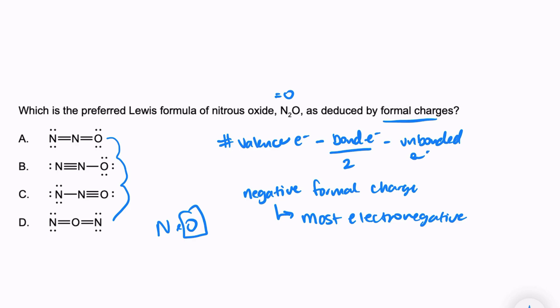When I look at all of these options A, B, C, and D, the one that looks like it could have a negative on the oxygen is this one right here. Let's go ahead and calculate the formal charges and see if we are correct.